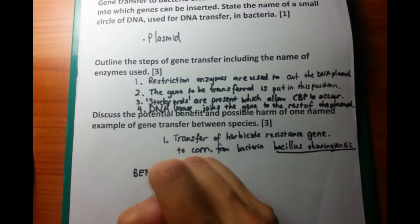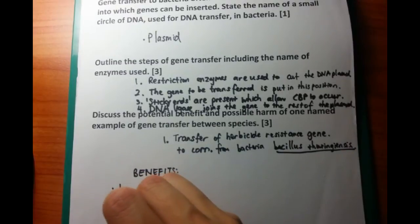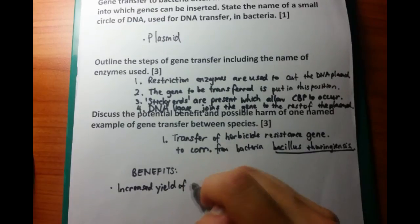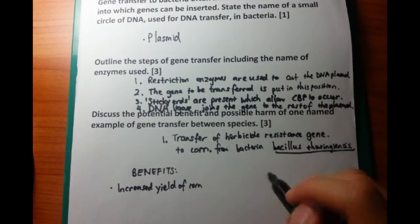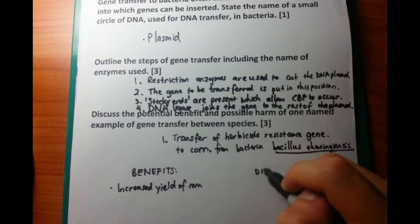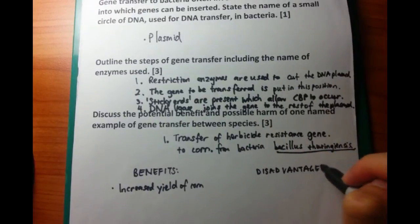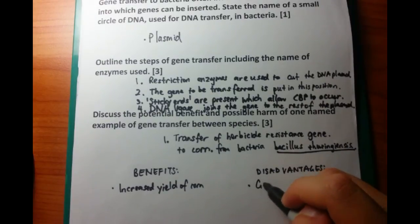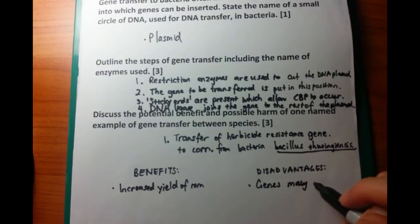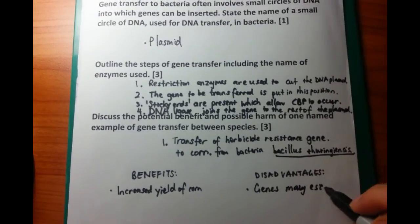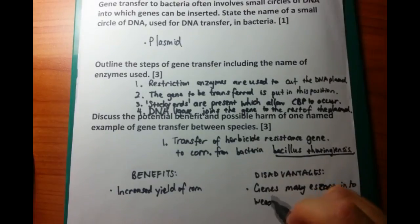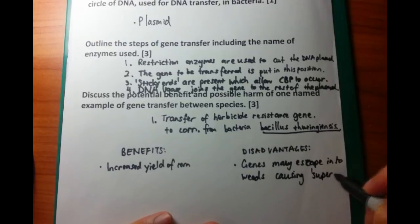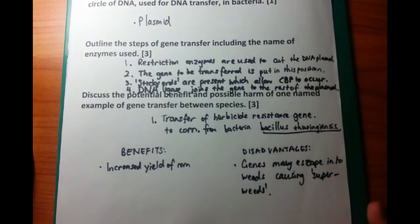The benefits and disadvantages are straightforward once you remember the name of the gene and its source. The benefit is that because you have a more efficient way of growing the corn, you get an increased yield. A disadvantage is that the herbicide resistance gene may escape from the corn into an undesirable plant such as a weed, causing so-called super weeds which are very difficult to kill because they have inbuilt resistance.